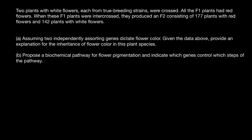Welcome to Nikolai's genetics lessons. Today's problem: two plants with white flowers, each from true-breeding strains, were crossed. All the F1 plants had red flowers. When these F1 plants were intercrossed, they produced an F2 consisting of 177 plants with red flowers and 142 plants with white flowers. Question 1: assuming two independently assorting genes dictate flower color, provide an explanation for the inheritance of flower color. Question 2: propose a biochemical pathway for flower pigmentation and indicate which genes control which steps.